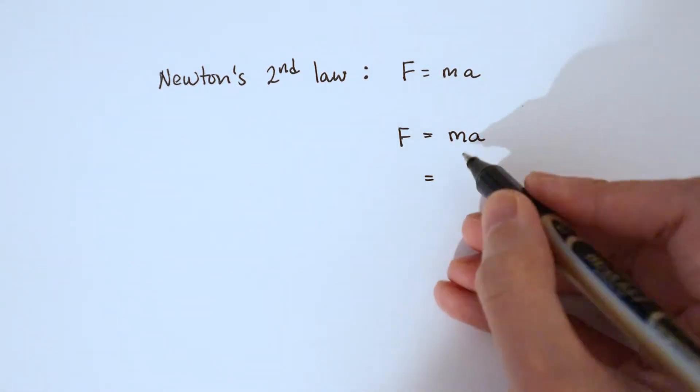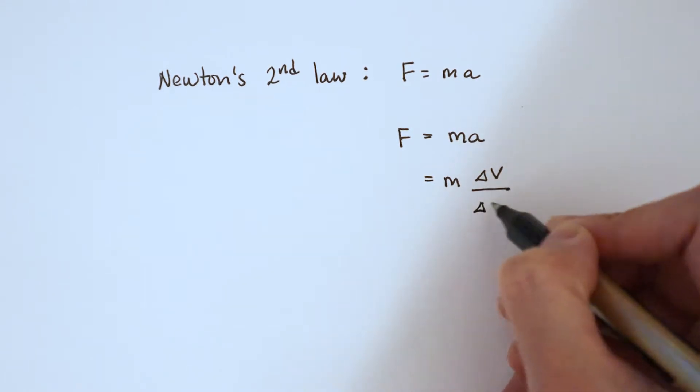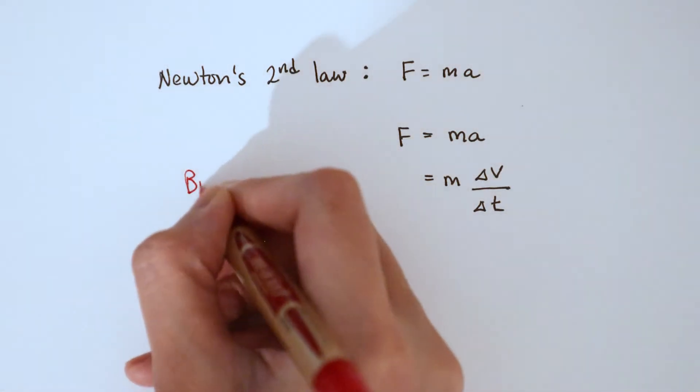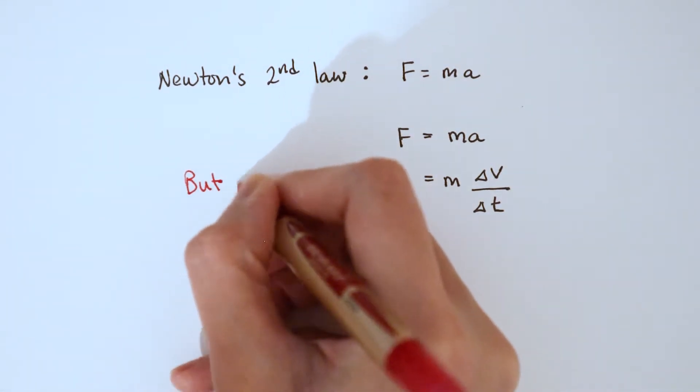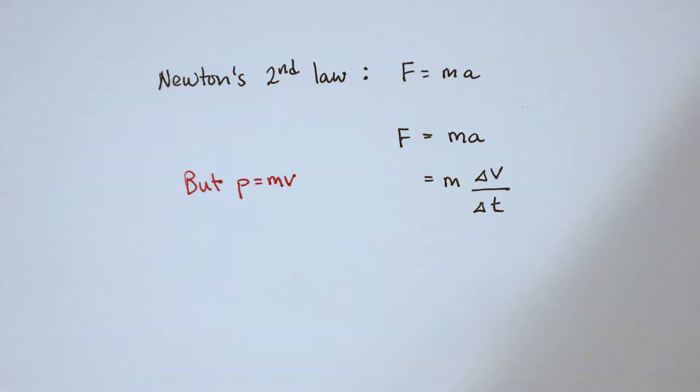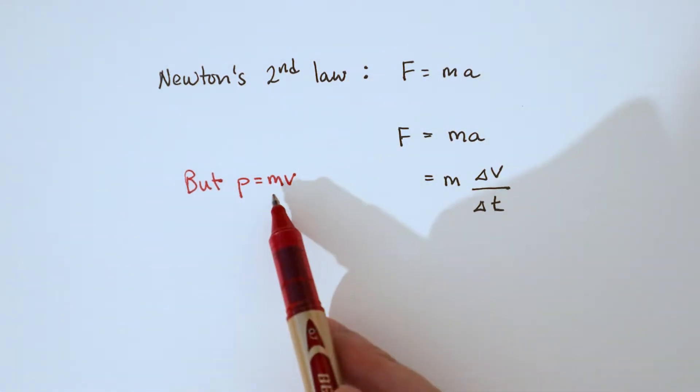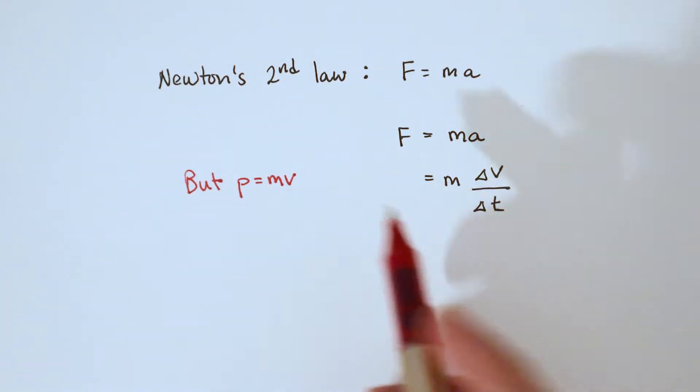We can rewrite that as mass times the change in velocity divided by the time it takes to do so. Now we also know that momentum is equal to mass times velocity. So let's see how we can manipulate this equation and substitute that into the original F equals ma equation.